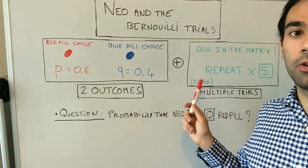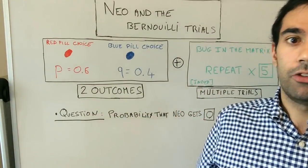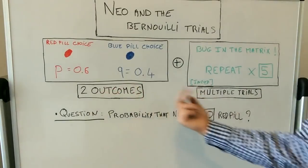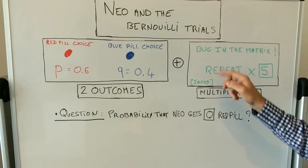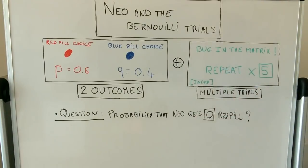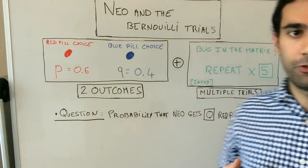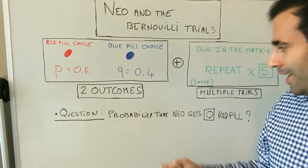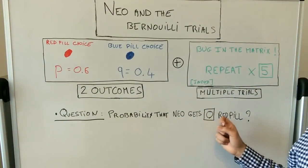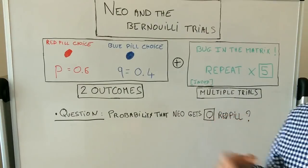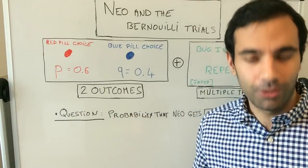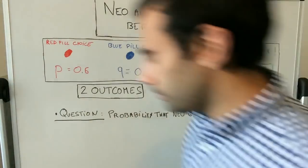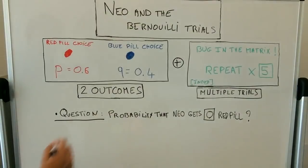All those trials are independent, and if that's the case you end up with a perfect Bernoulli trial situation — two outcomes and a repetition of independent events. Now, question: what is the probability that Neo gets zero red pills, meaning he fails all the tests and picks the blue pill every time?